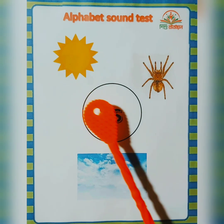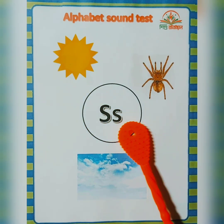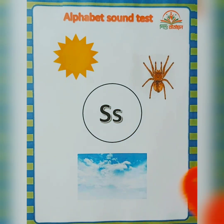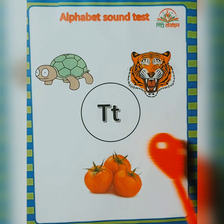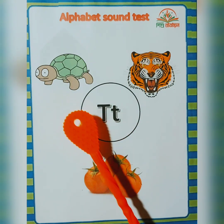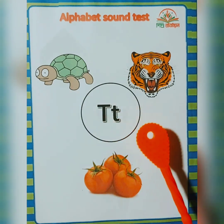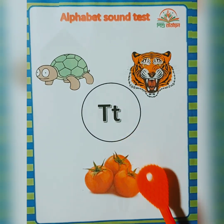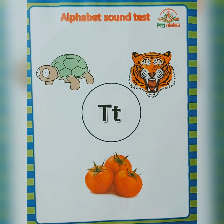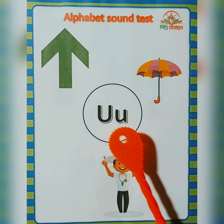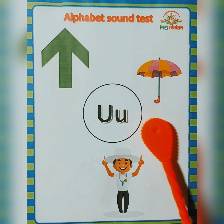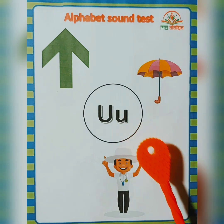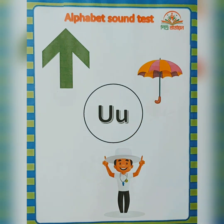S — sun, spider, sky. T — turtle, tiger, tomato. U — umbrella, umpire.